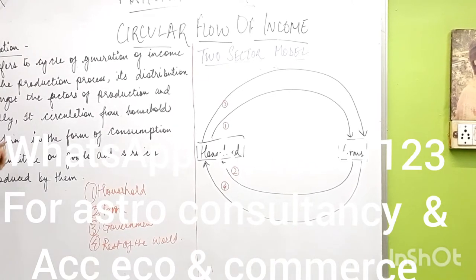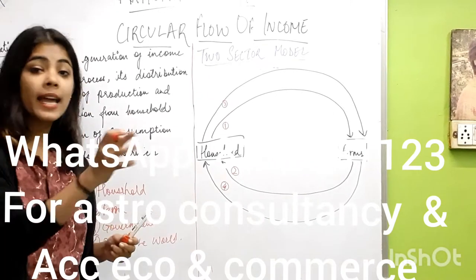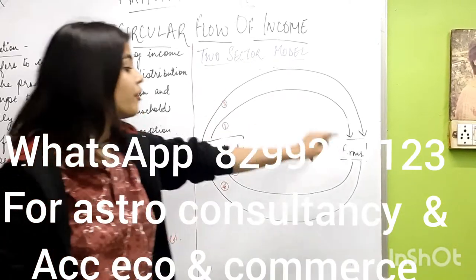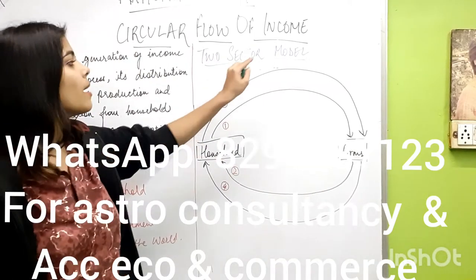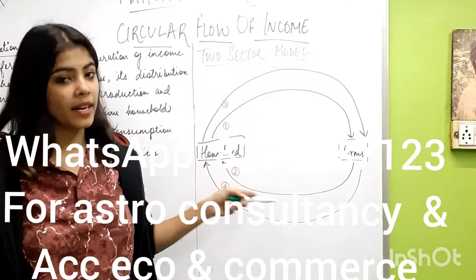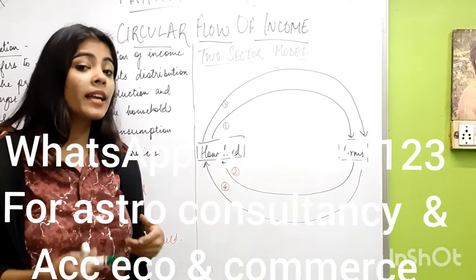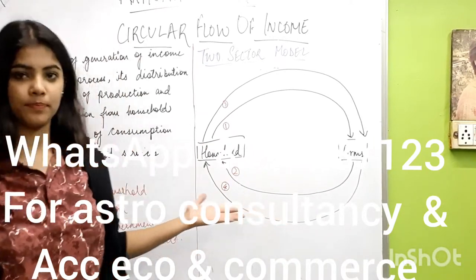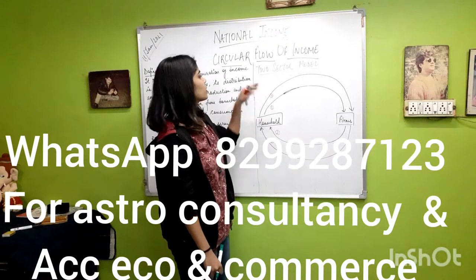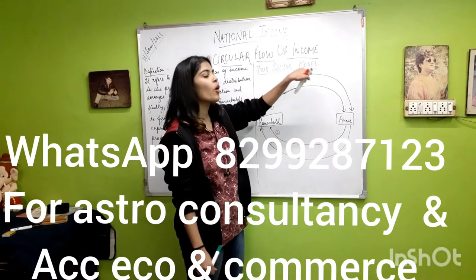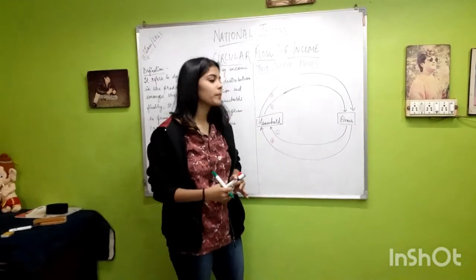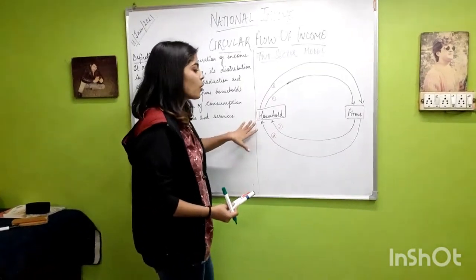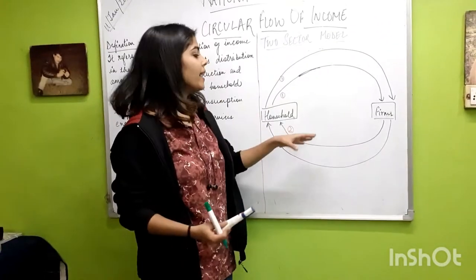There are different models. First we will learn the two-sector model. We will start with the two-sector model without a capital market. In this model, there are two parties: households and firms. Firms are production units.